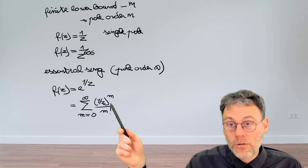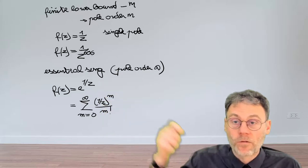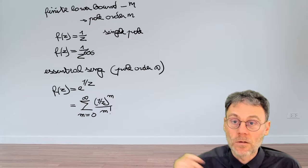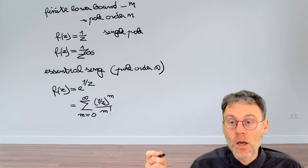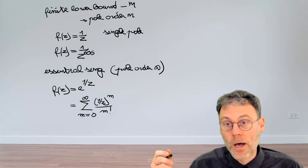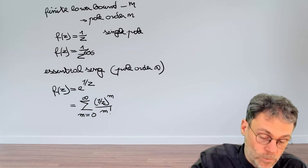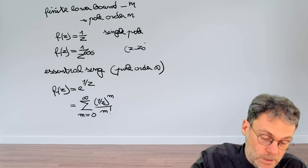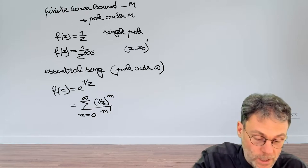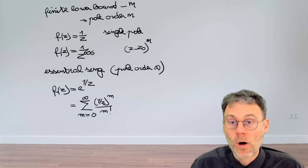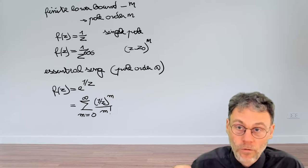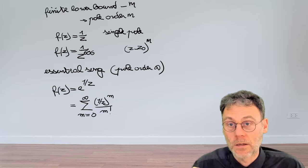Another important difference between essential singularities and finite order singularities is that for a finite order singularity, you can simply get rid of them by multiplying them with a certain power of z minus z0. So if you multiply that by z minus z0 to the power of m, you get a new function which no longer has that singularity.